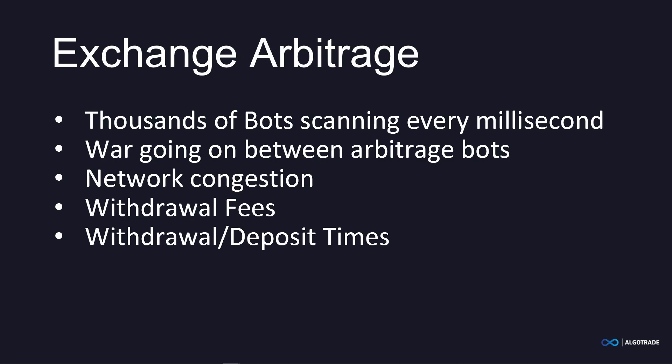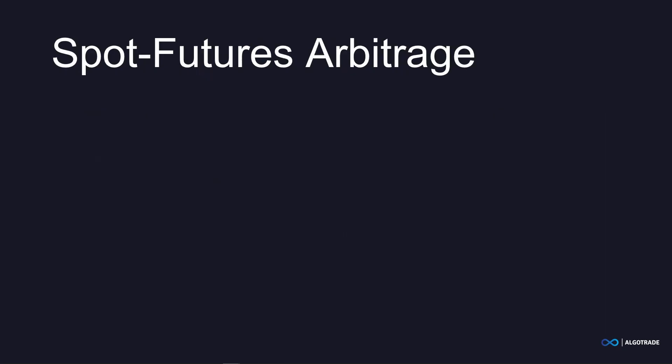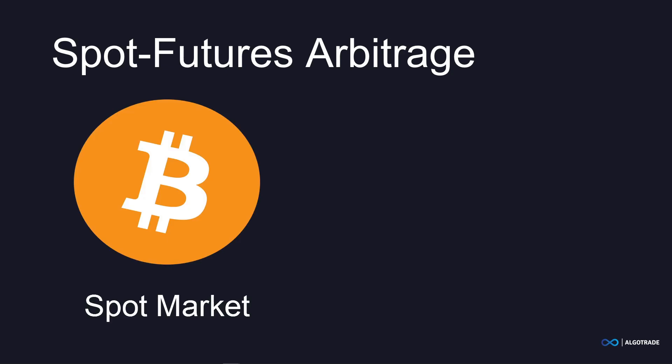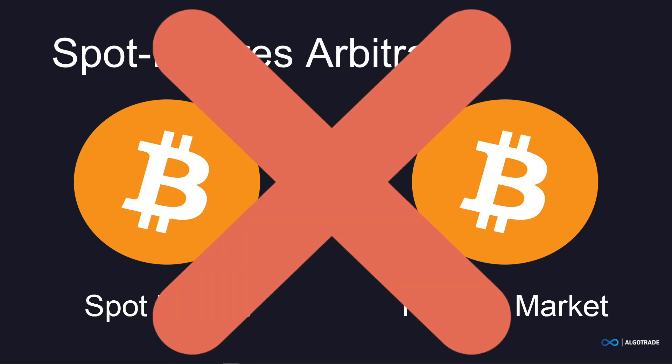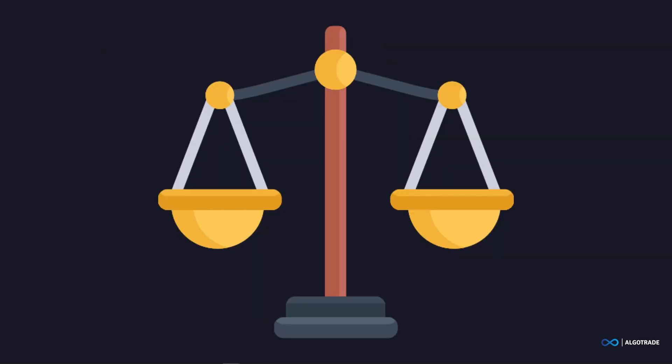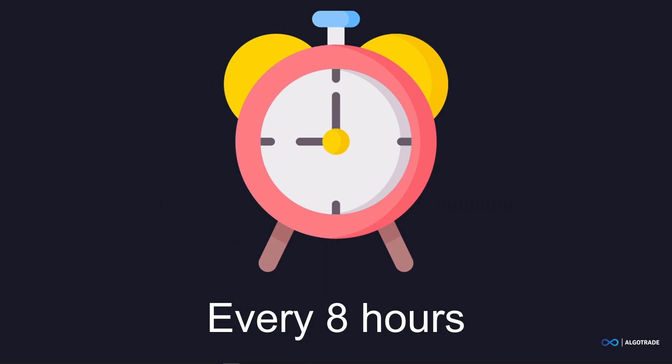Luckily, there are different forms of arbitrage. While arbitrage between exchanges almost never works anymore, arbitrage between markets does work very well. What I'm talking about is arbitraging between the spot and futures market. Just like the Bitcoin price can be different on exchange A and exchange B, the price of Bitcoin in the spot market can also be different from the price in the futures market. What you can do is set up a market neutral position and then collect the funding fee in the futures market every eight hours.